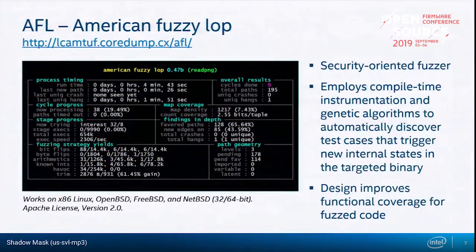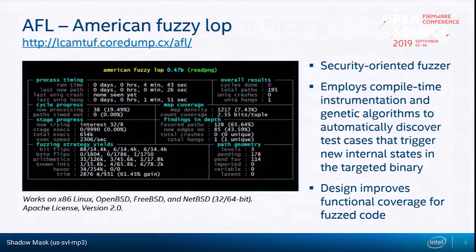AFL is a very security-oriented fuzzer. It works across a variety of operating systems, is Apache-licensed, and uses compile-time instrumentation and genetic algorithms. It tries to find test cases that trigger what they politely call 'new internal states' in the target binaries — in other words, edge cases you didn't test — improving your functional coverage.